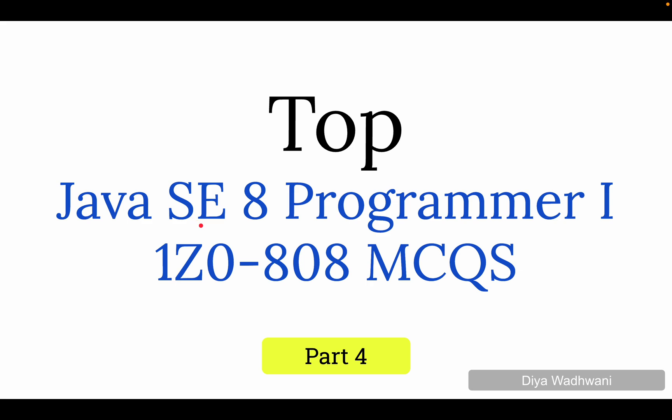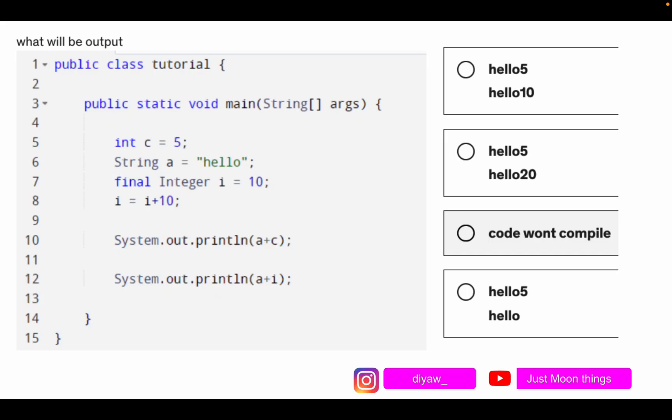Hello guys and welcome to part 4 of the playlist or series in which we are going to solve Java 1Z0-808 MCQs. So let us just get started. Over here we have a question, we have a code, and then we have four options. What will be the output is the question, so we have to observe this code and figure out what will be the output.